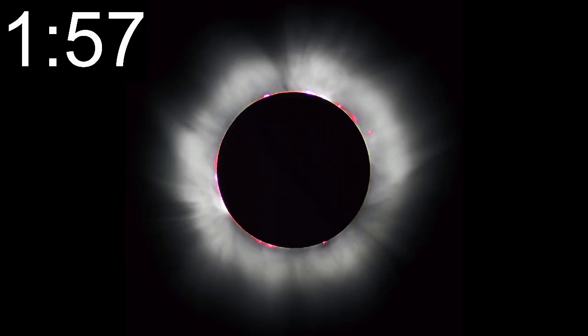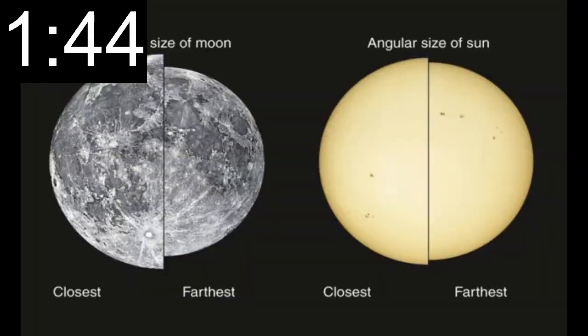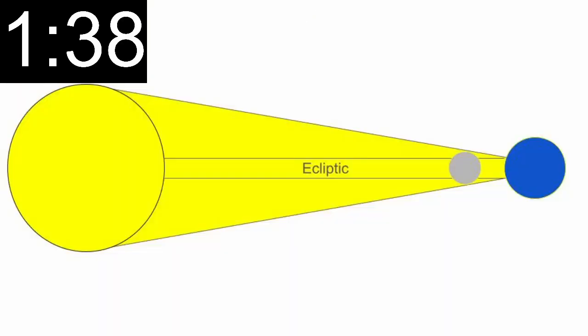A total solar eclipse is a breathtaking celestial spectacle where the moon temporarily blocks the sun's light from view. Total solar eclipses occur when three astronomical conditions coincide: firstly, the moon must appear larger than the sun, which occurs when the moon gets closer and the sun further from the Earth; secondly, the moon must be on the same level or plane as the Earth's orbit of the sun; and finally, the moon must align directly between the Earth and the sun.